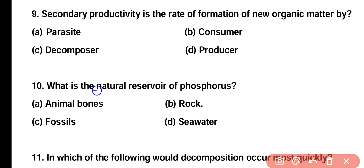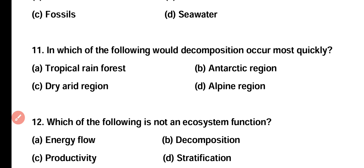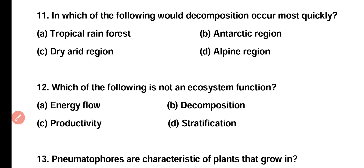Question number ten: what is the natural reservoir of phosphorus? Animal bones, rocks, fossils, or seawater? Correct answer is option B. Rock is the natural reservoir of phosphorus, although a large amount of phosphorus is also present in seawater.